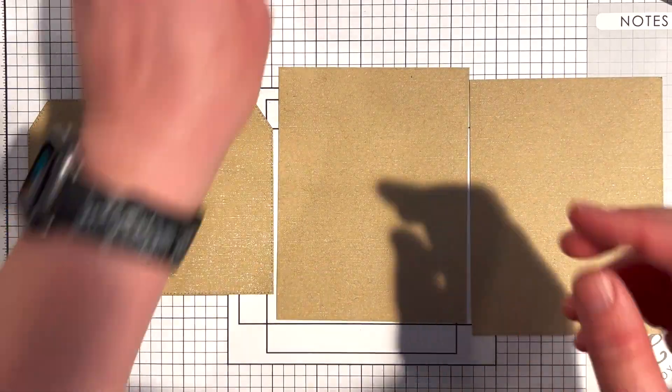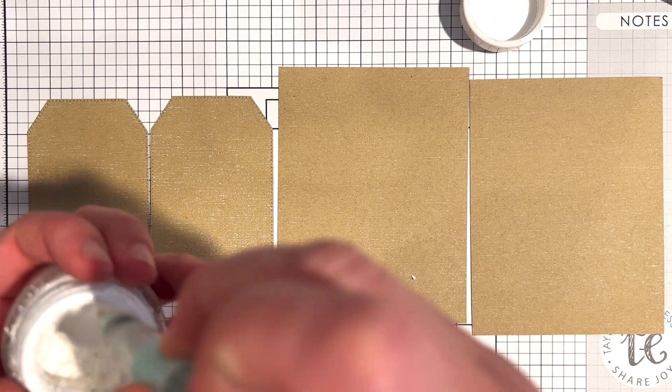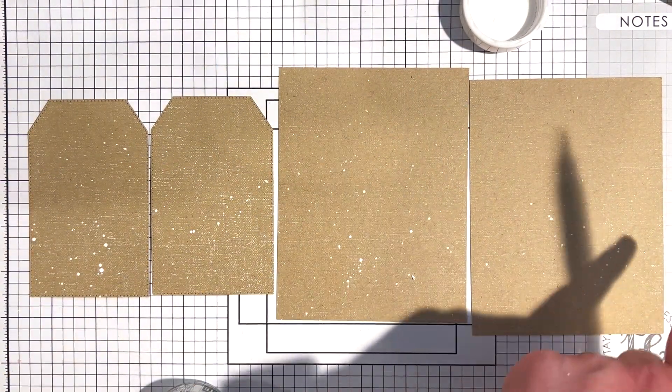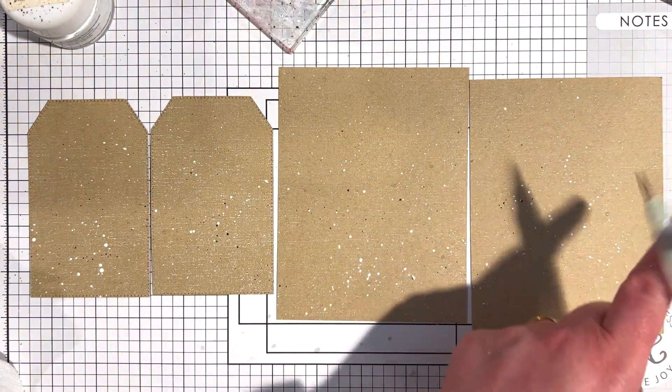I added splatters to my stamped backgrounds using copic opaque white ink and chocolate truffle liquid watercolor. I picked up the color onto a water brush and then tapped that brush on my finger to splatter onto the projects.